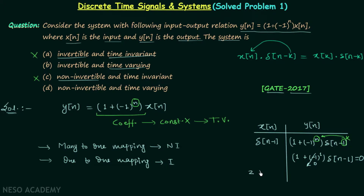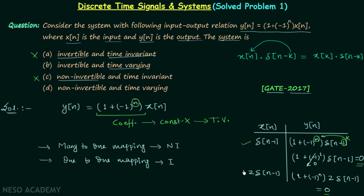Now let's take another input: x[n] = 2δ[n-1]. For this, y[n] = (1 + (-1)^n) * 2δ[n-1]. Again using the same property, replacing n by 1, we get (1 + (-1)^1) * 2δ[n-1] = 0 * 2δ[n-1] = 0. We are getting the same output y[n] = 0 for two different inputs, so there is many-to-one mapping, and therefore the system is non-invertible.